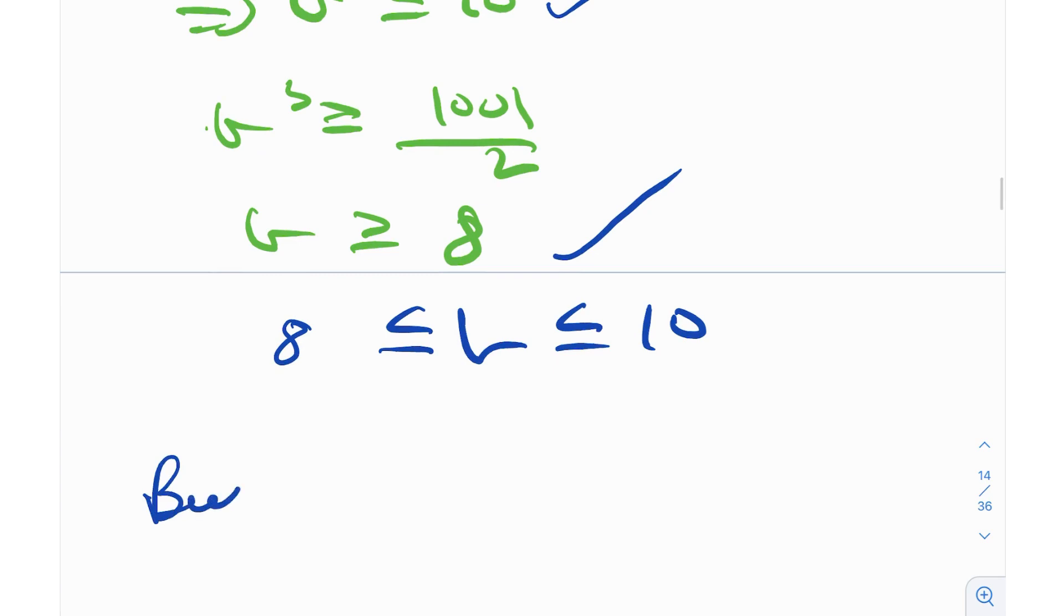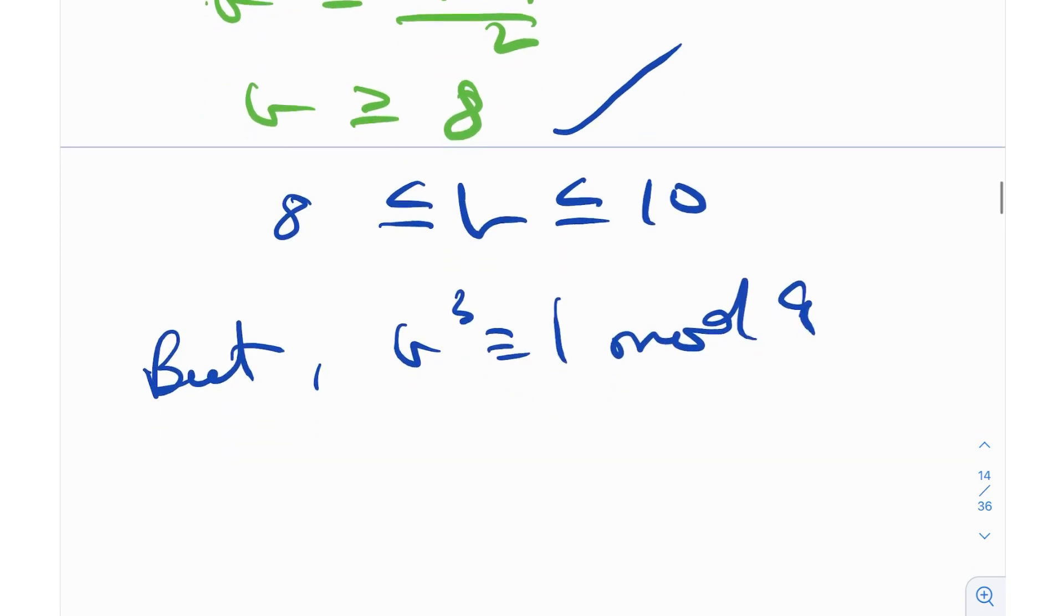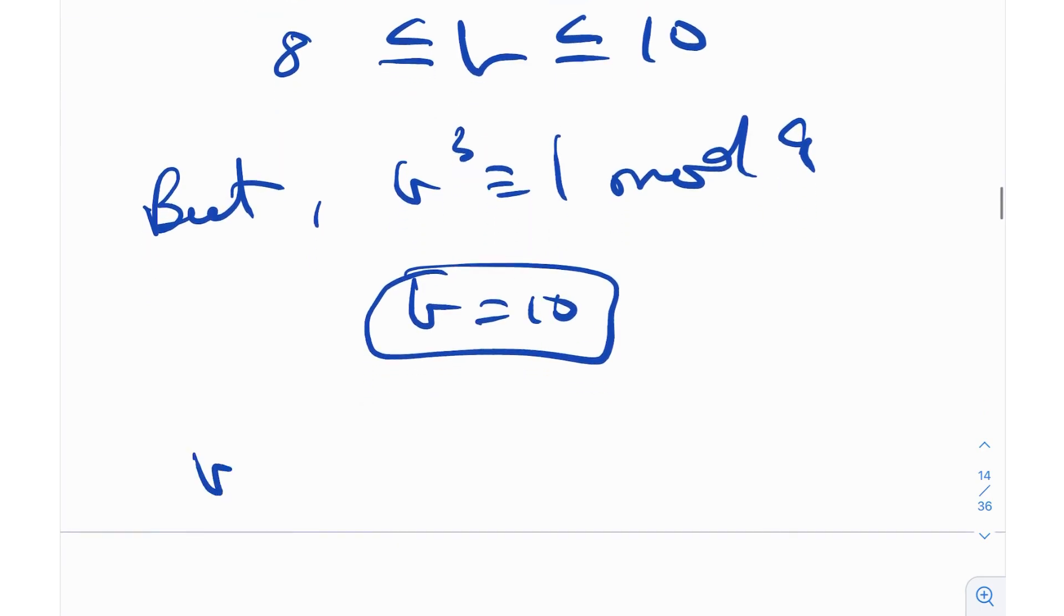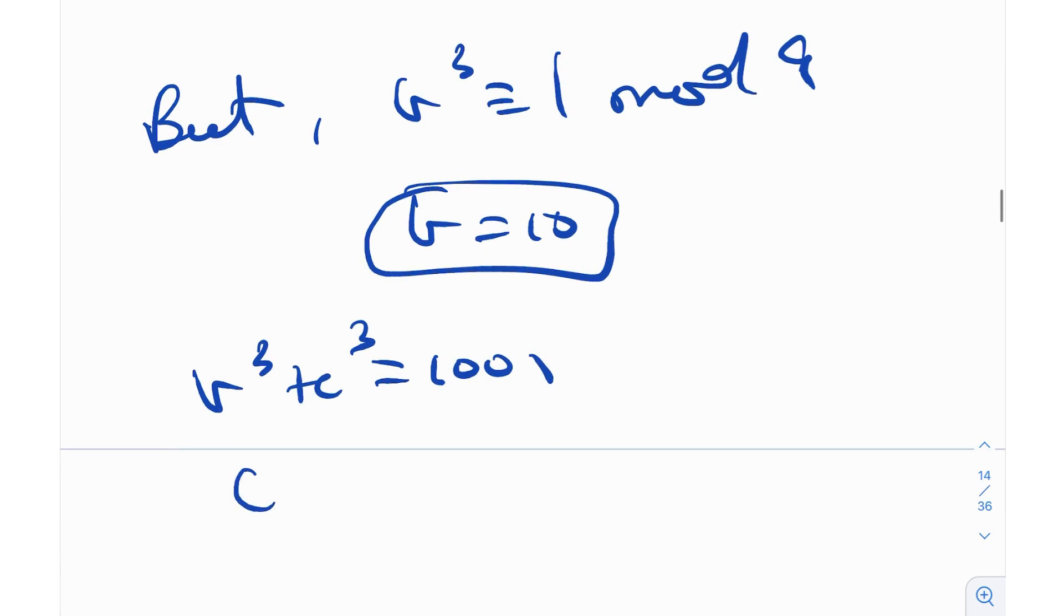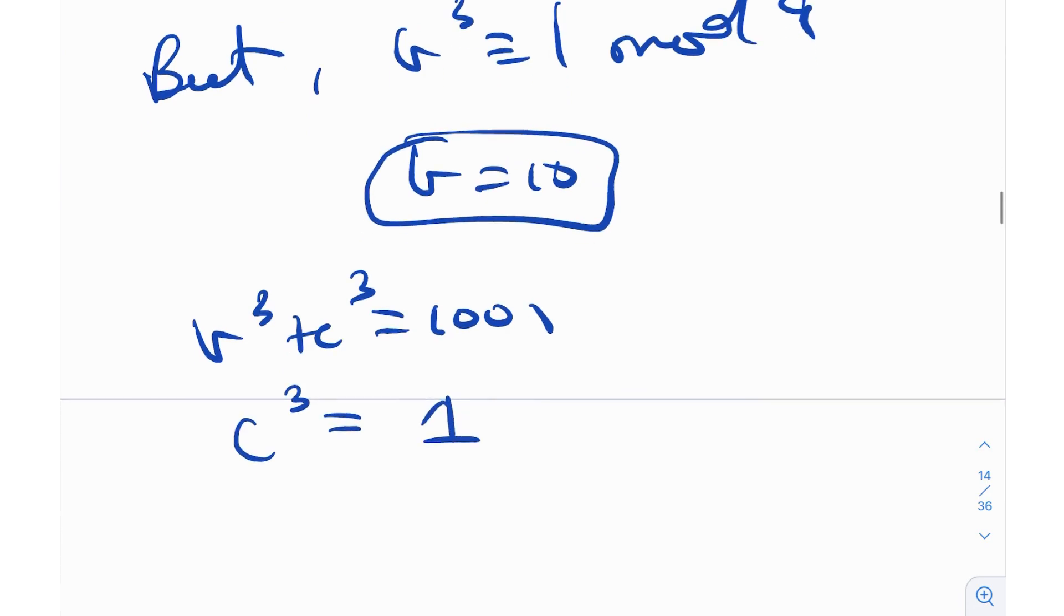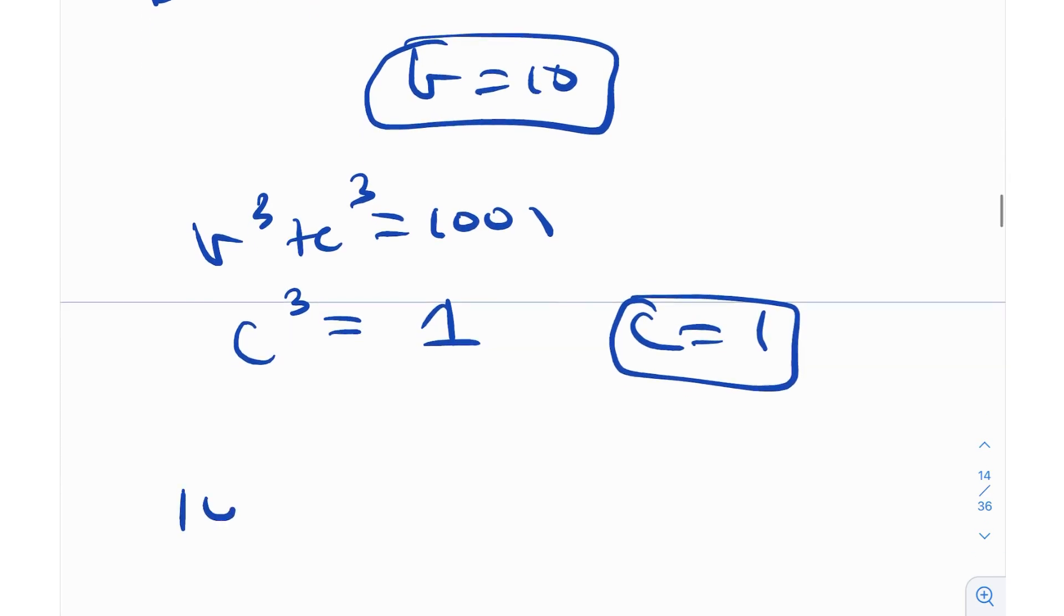But B³ needs to be 1 mod 9, and the only case for that is when B = 10. So we found another solution as well. Now then, B³ + C³ was 1001, so C³ is what? It's just 1. Because C is a natural number, C then has to be 1. So what should be the solution? 10, 10, 1.